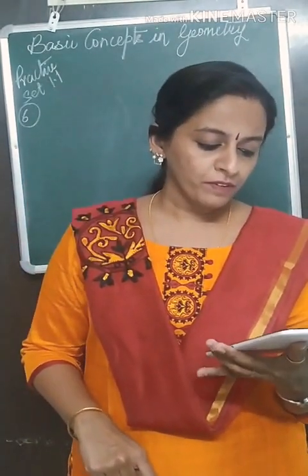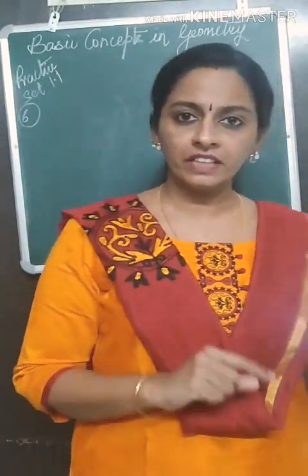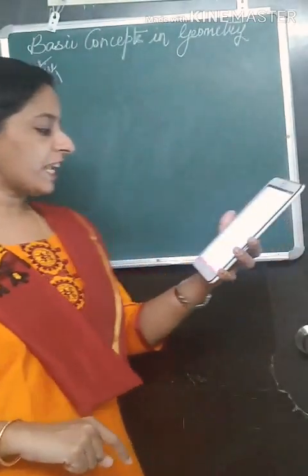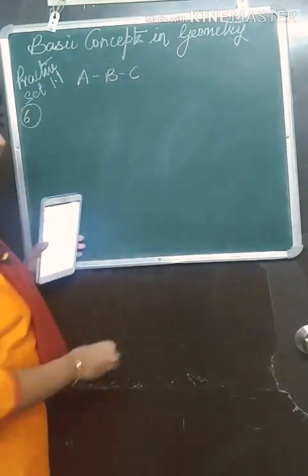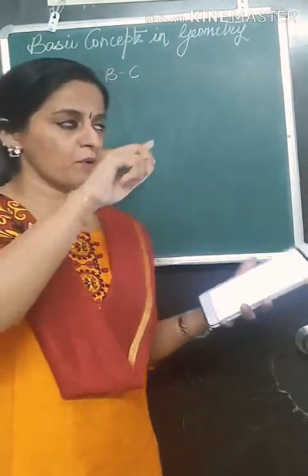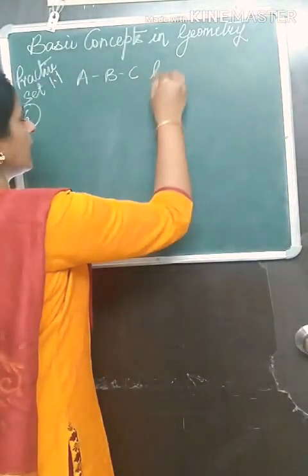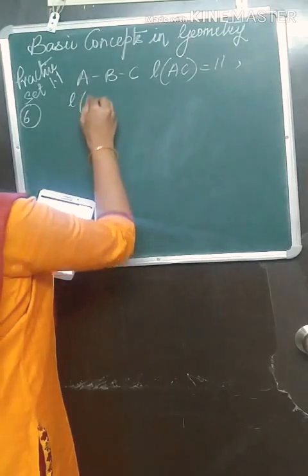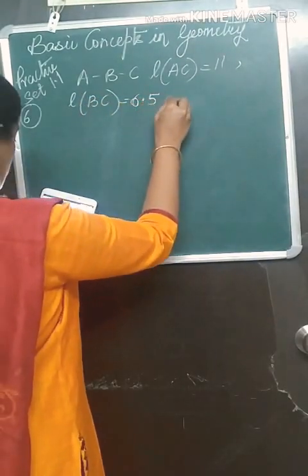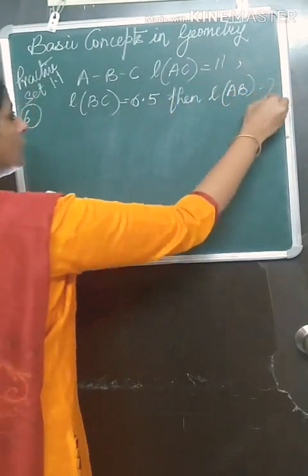Read the question: sketch a proper figure and write answers of the following questions. We have to draw the figure according to the given condition. If A-B-C, that means point B is coming between A and C, and length of AC is 11. Length of BC is equal to 6.5. Find the length of AB.